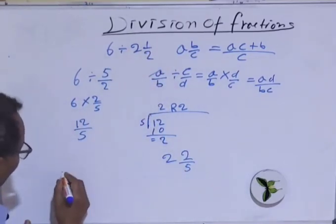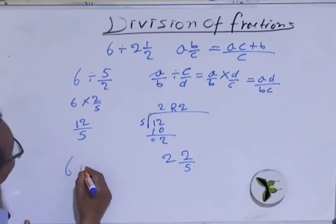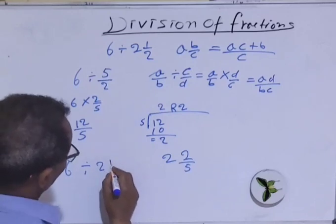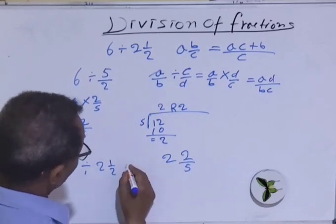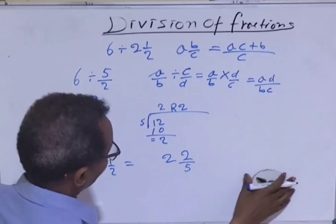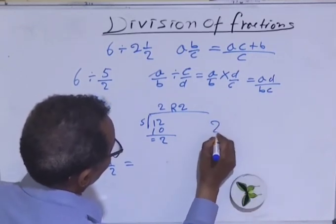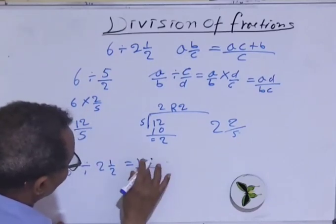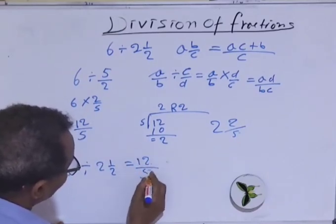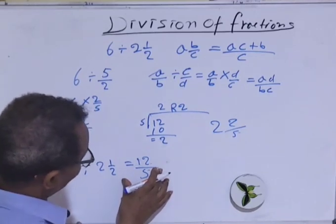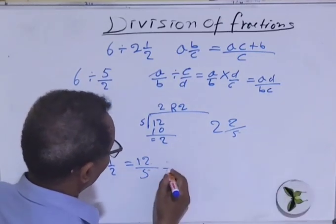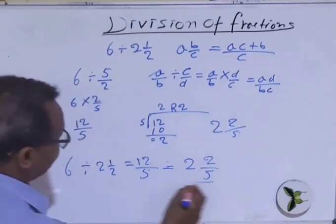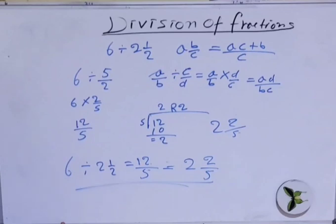Let's bring down this one. 6 divided by 2 and 1 half is equal to 2 and 2 over 5, and 12 over 5. This is as an improper fraction and equal 2 and 2 over 5 as a mixed fraction. This is our final result.